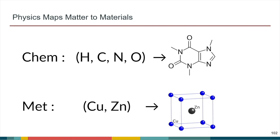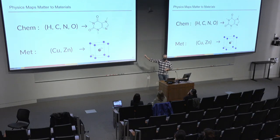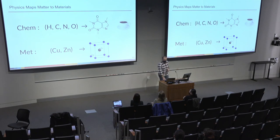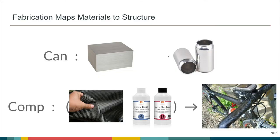We can think of fabrication in addition to physics as mapping materials to structure. So if you have a block of aluminum, it's not going to do you a whole heck of a lot of good sitting on your desk. However, if you have this fabrication process that takes aluminum into a can, now you have something useful. Similarly, you can take a tuple of materials like carbon fiber and an epoxy resin, and you can get a super lightweight, high aerodynamic bike.